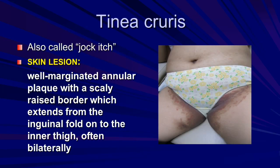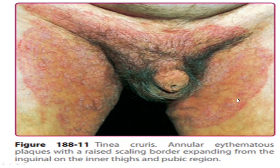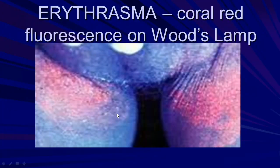Tinea cruris (jock itch) involves the skin. Well-demarcated annular plaques, scaly raised border extending from the inguinal fold to the inner thigh bilaterally. This is erythematous plaque with raised scaling border expanding in the pubic region. Erythrasma differentiates under Wood's lamp fluorescence.